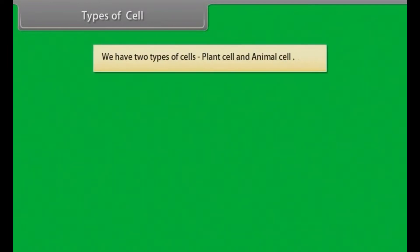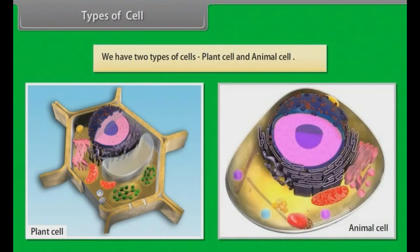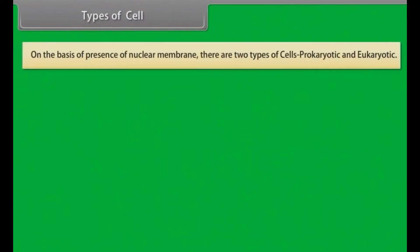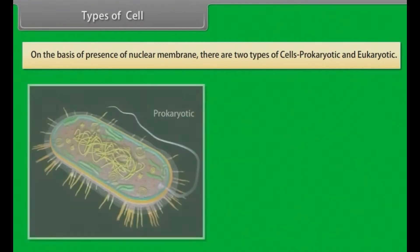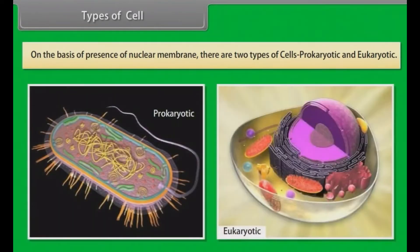We have two types of cells: plant cells and animal cells. On the basis of the presence of nuclear membrane, there are two types of cells: prokaryotic and eukaryotic.